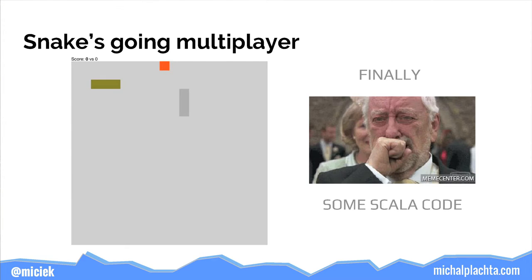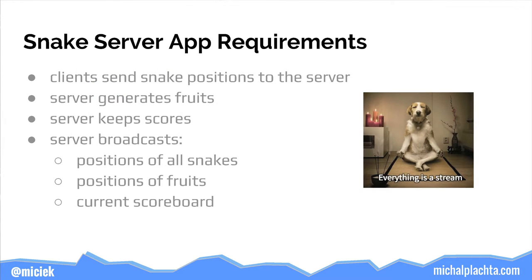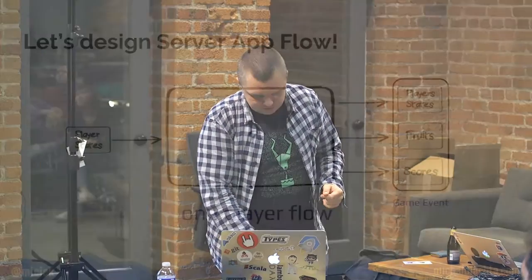In the multiplayer version we also need to send streams to the server. Snakes go multiplayer now and there will be some Scala code. The requirements: clients send snake positions to the server; each client connects and pushes positions; the server generates fruits and scores and broadcasts all of them back to the clients.